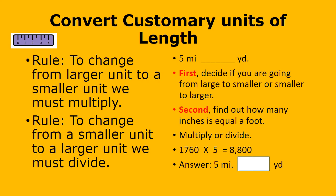The third problem: 5 miles equals blank yards. We decide if we're going from larger to smaller or smaller to larger — miles is larger than yards, so we're going from larger to smaller and we multiply. How many yards equal a mile? 1,760. So we multiply 1,760 by 5 and we get 8,800. That is our answer.